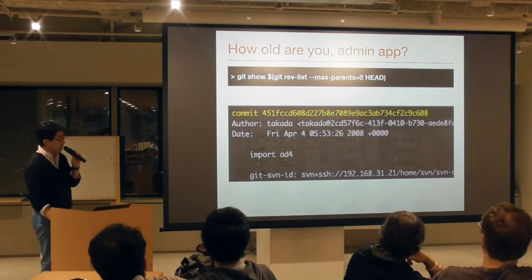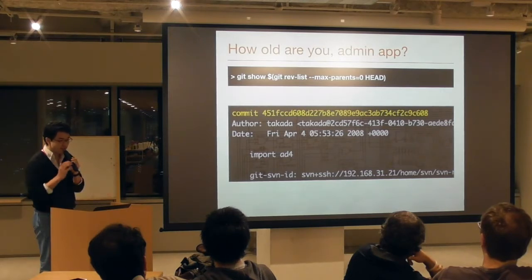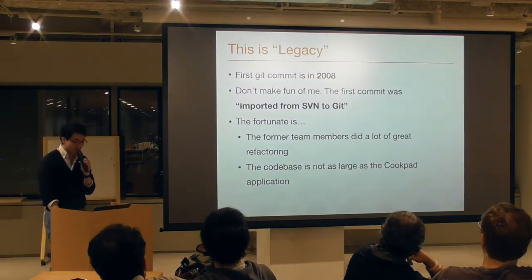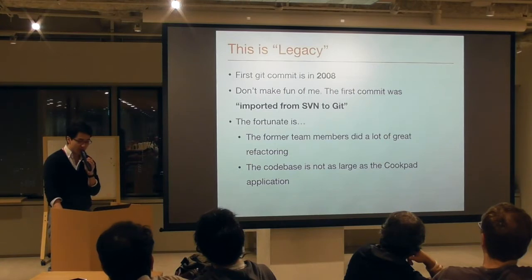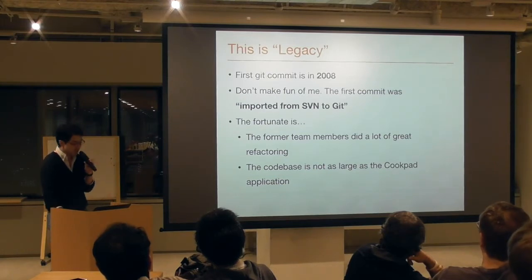How old is the admin app? This is the first commit in Git — it was 2008. Actually, the initial commit is an import from SVN. But fortunately, former team members did a lot of great refactoring. The codebase is not as large as the CookBat application, but it is still so hard to maintain.